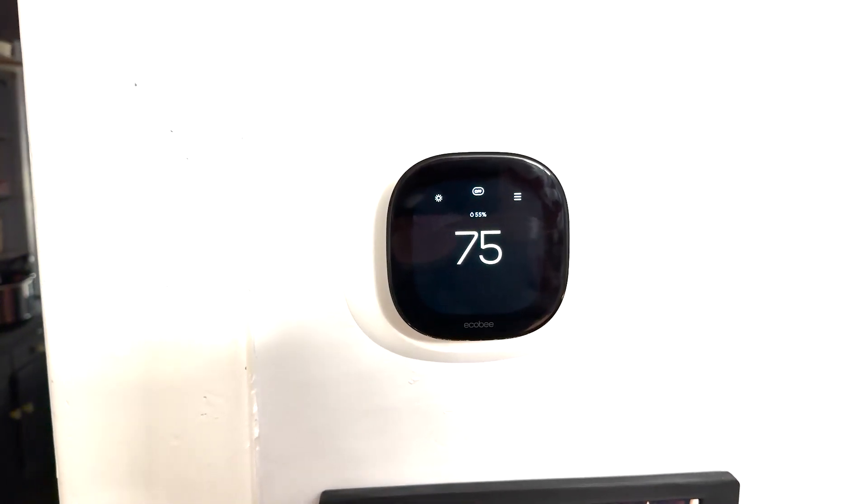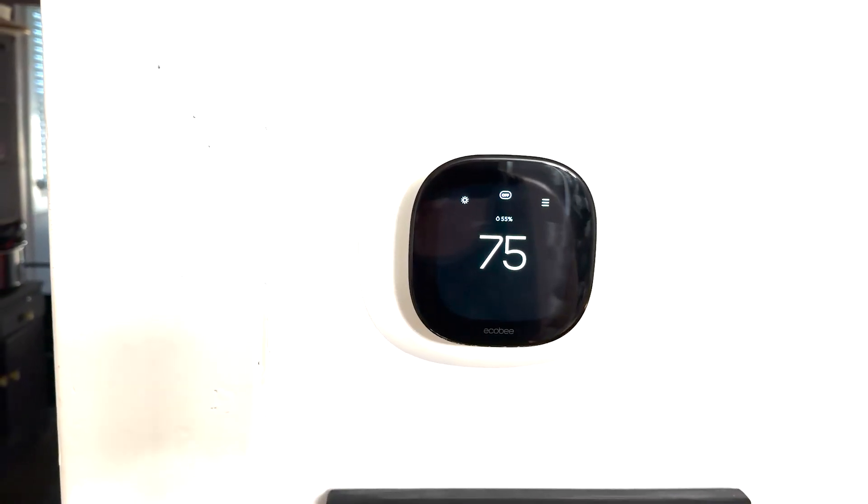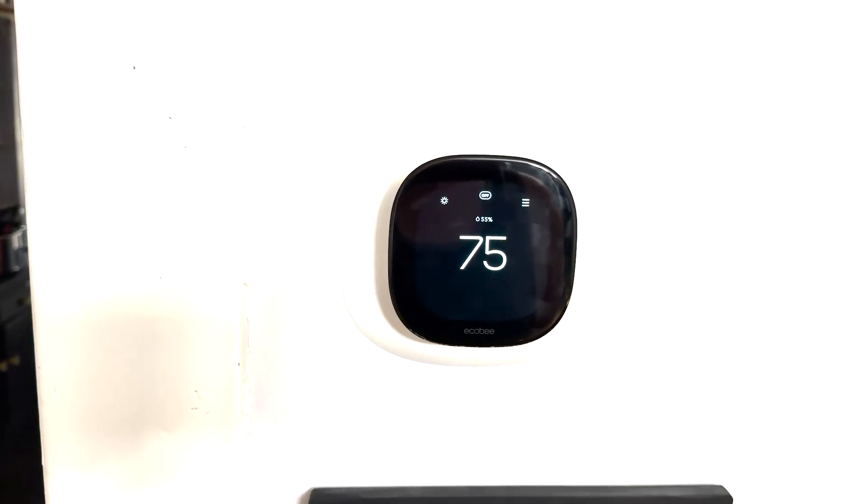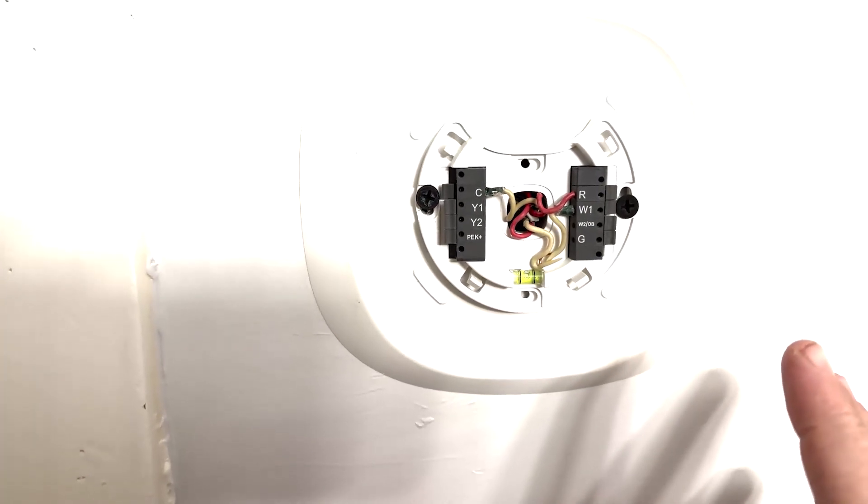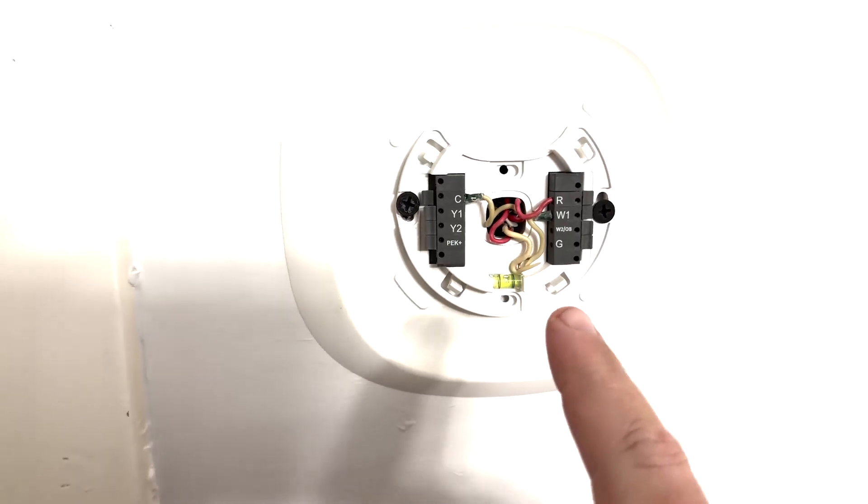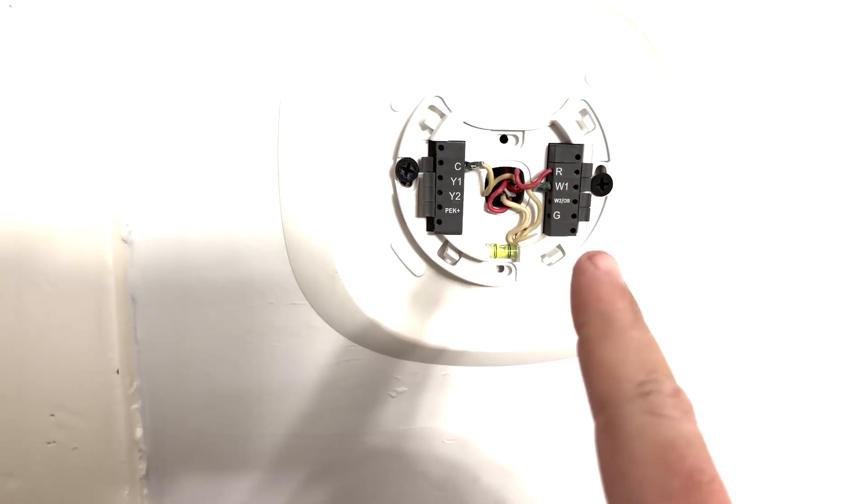I'm going to show a quick video on how to install an Ecobee thermostat on a two-wire system. Now I know this wiring isn't ideal, but this is a two-wire system with a C-wire installed.